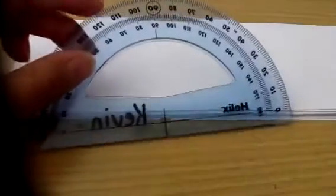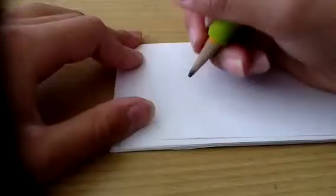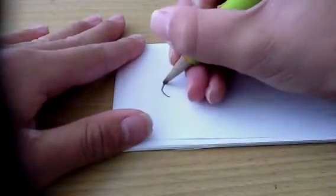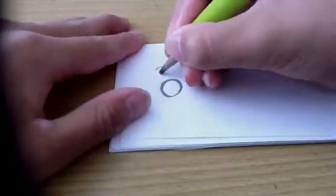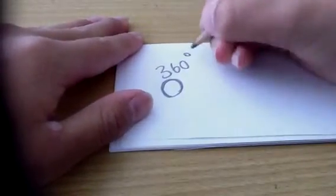Okay, so welcome to this video on how to use a half circle protractor. Before we learn how to use a half circle protractor, we need to learn the first key component. Let's just say this is a circle. A circle equals 360 degrees.